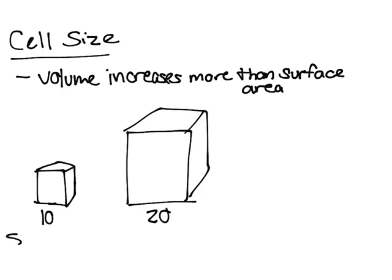The surface area for the small one is going to be 600 units, while the big one is going to be 2,400 units. The volume for the small one is going to be 1,000, while for the big one, it's 8,000.